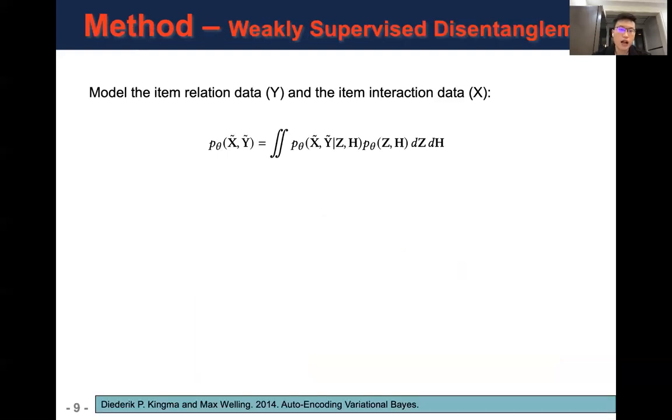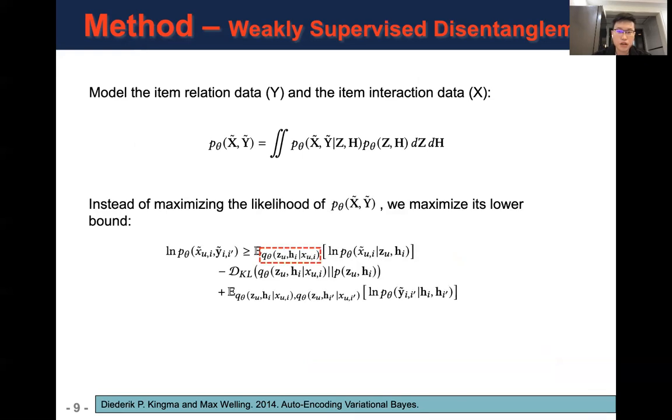CGR models item relation data y and item interaction data x simultaneously using the following equation. In this equation, theta denotes the parameter of CGR. Theta_u denotes the user representation. H denotes item representation. Because the integral is hard to compute, following the paradigm of variational autoencoder, we maximize the lower bound of P theta instead of maximizing the likelihood directly. In the lower bound, the second term is the KL divergence term, and the third term aims to model the item relationship.